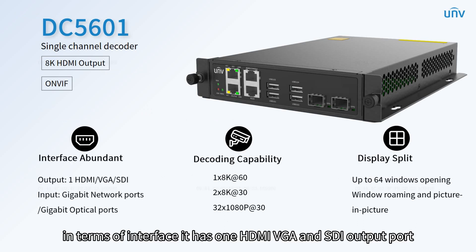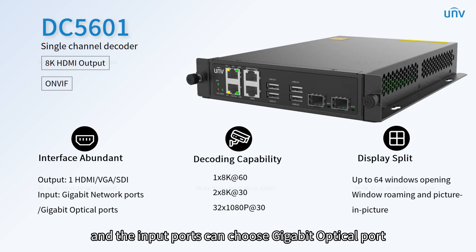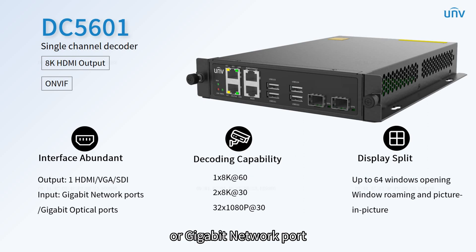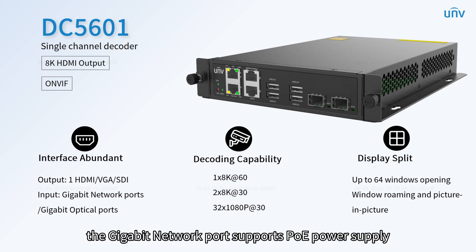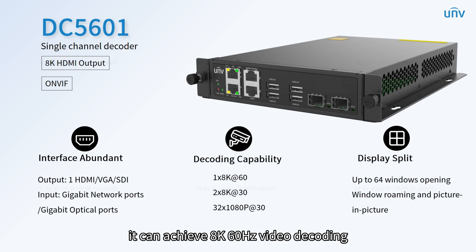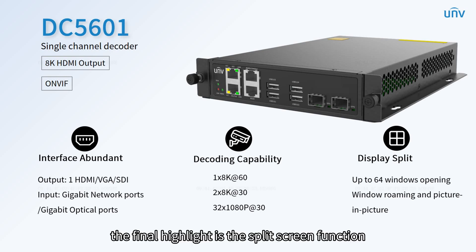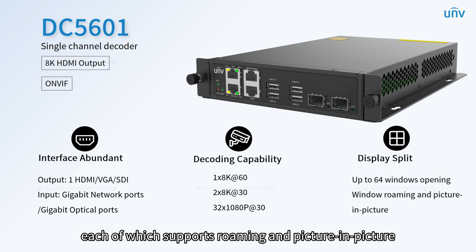In terms of interfaces, the DC5601 has one HDMI, VGA, and SDI output port; the HDMI interface supports 8K video output. Input ports can be a gigabit optical port or gigabit network port, with the gigabit network port supporting PoE power supply. For decoding capability, it can achieve 8K 60Hz video decoding, and the whole device supports 32 channels of 1080p video decoding output. The split-screen function can realize 64 windows opening, each supporting roaming and picture-in-picture.